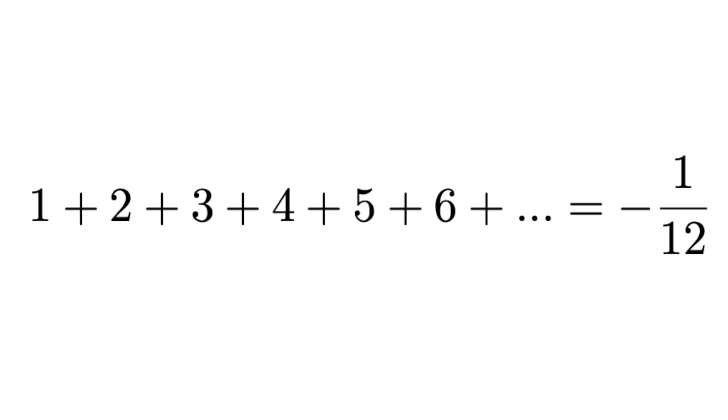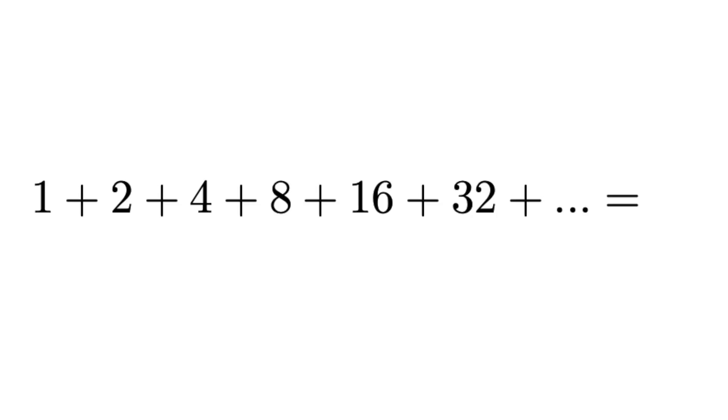If you clicked on this video, there's a good chance that at some point you've heard the result that if you add 1 plus 2 plus 3 plus 4 plus 5 on and on up to infinity, that in some way that equals negative 1/12. Now obviously this result isn't exactly true — it depends on what we mean by summing up infinitely many numbers. Today I'm going to look at a strange one: that the sum of all powers of 2 up to infinity equals negative 1.